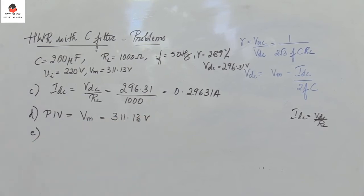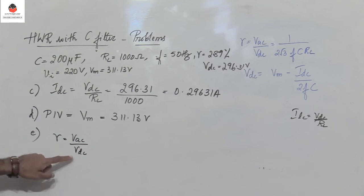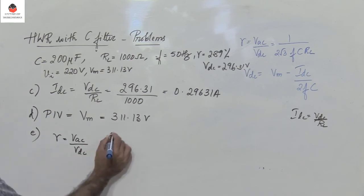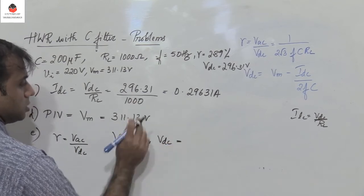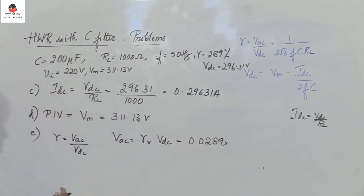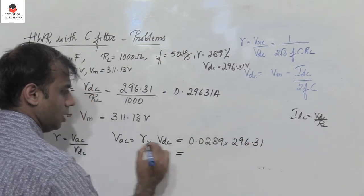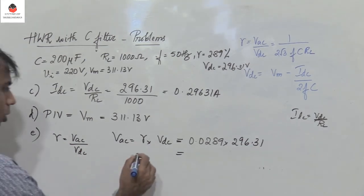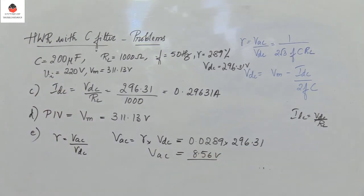Next, find the RMS ripple output voltage. We know that gamma equals VAC divided by VDC. Gamma is known and VDC is known, so VAC equals gamma into VDC. Substituting: gamma is 0.0289 into VDC is 296.31, giving VAC equals 8.56 volts.